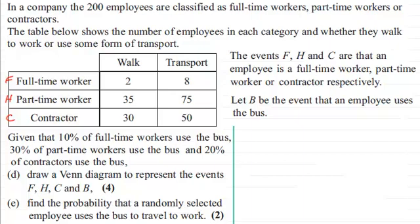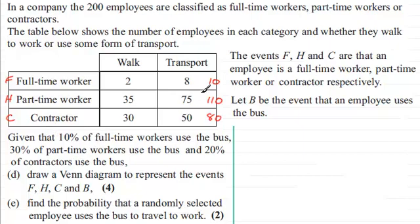Welcome back. First of all, I'm just going to get the totals of the full-time workers, part-time workers, and the contractors. For the full-time workers, we've got 10, 2, and 8, so a total of 10. For part-time workers, 35 plus 75 gives us 110. And then for the contractors, 30 plus 50, that's 80. The reason I'm doing that is we're going to need to work out various percentages of these quantities.